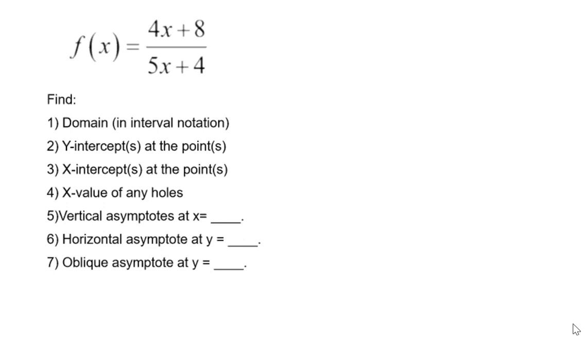We want to identify the domain, the y-intercept, the x-intercepts, the x-value of any holes, vertical asymptotes, a horizontal asymptote if any, and an oblique asymptote if any. There will only be one of these two.